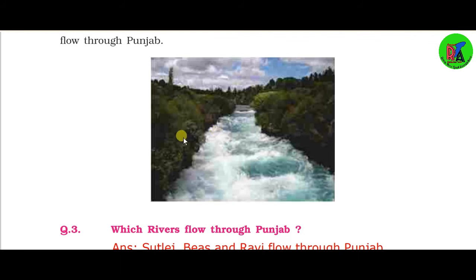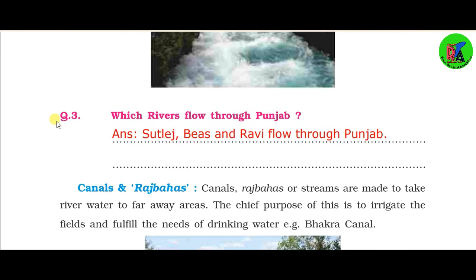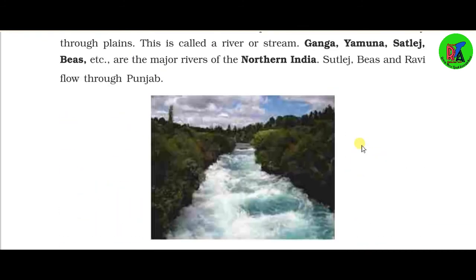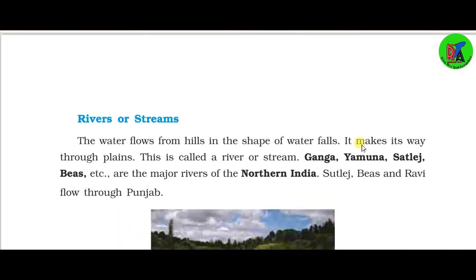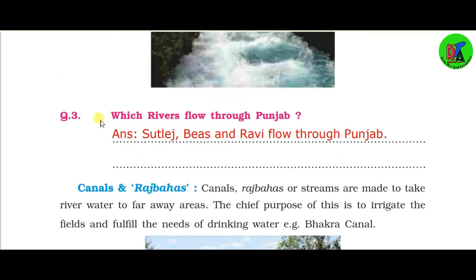Here is a picture of a river. Question three: Which rivers flow through Punjab? The answer is Sutlej, Beas, and Ravi flow through Punjab.